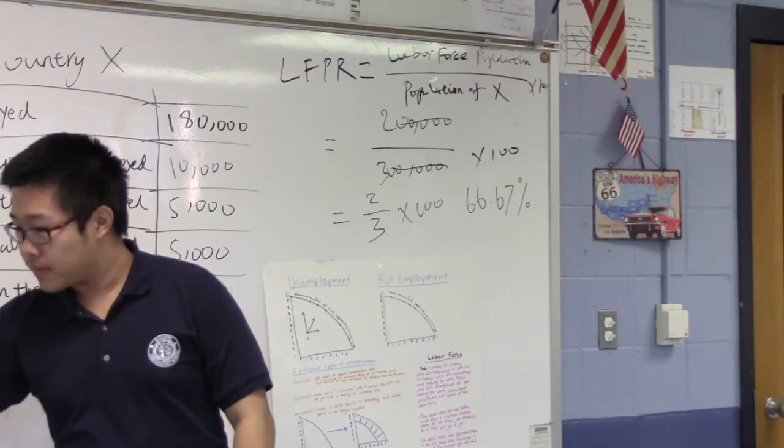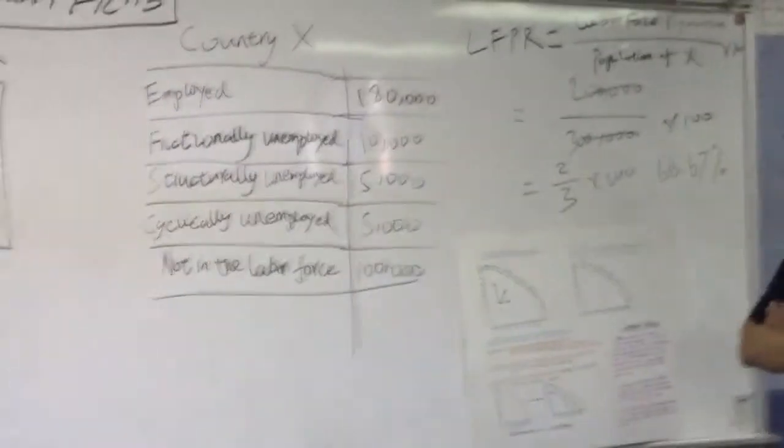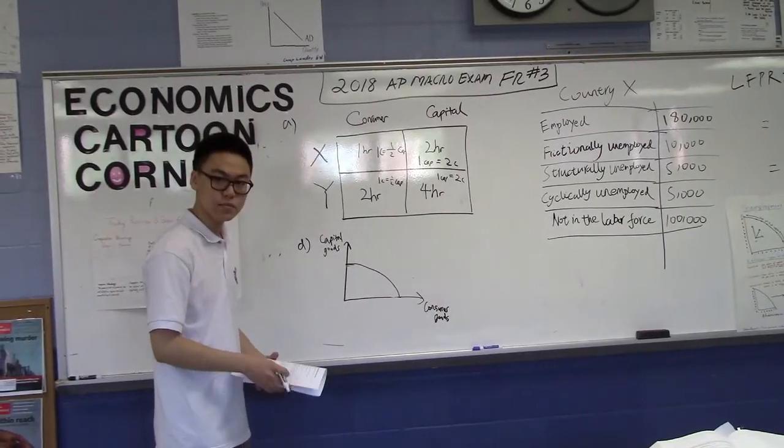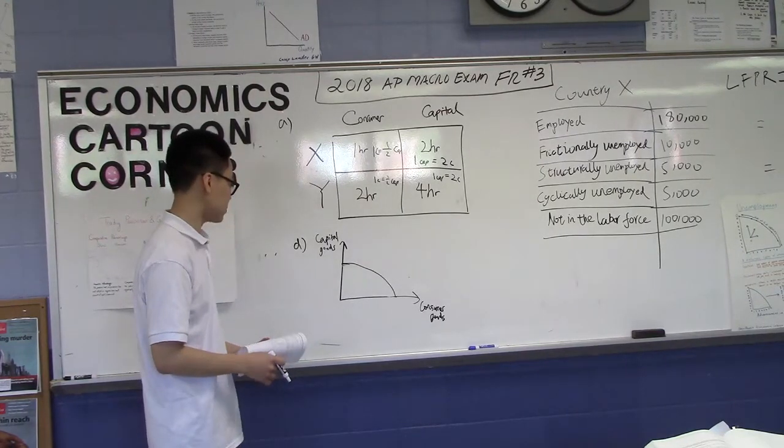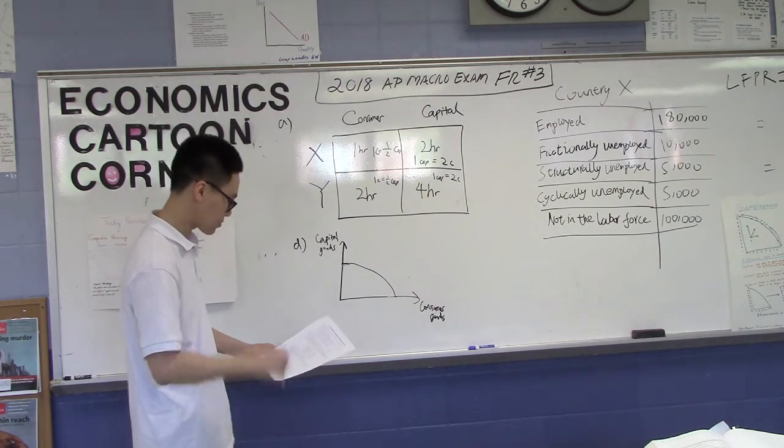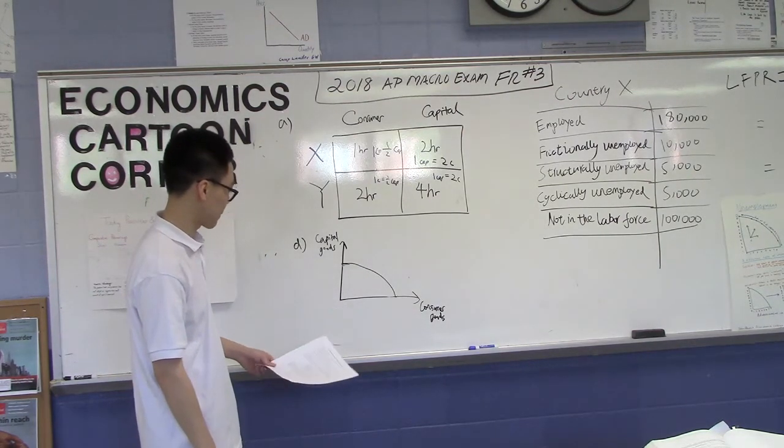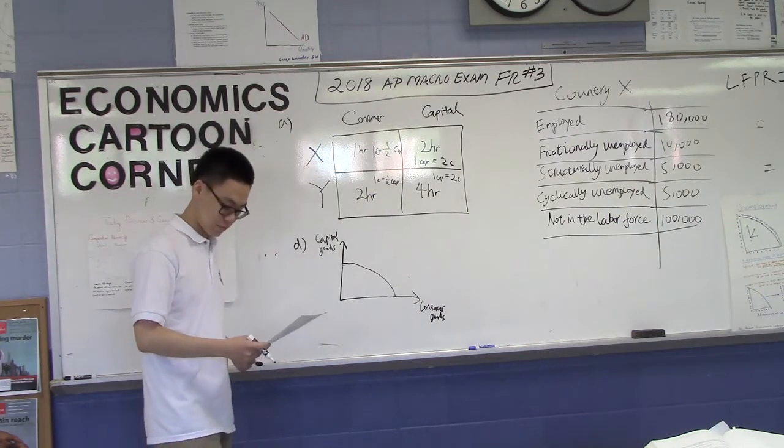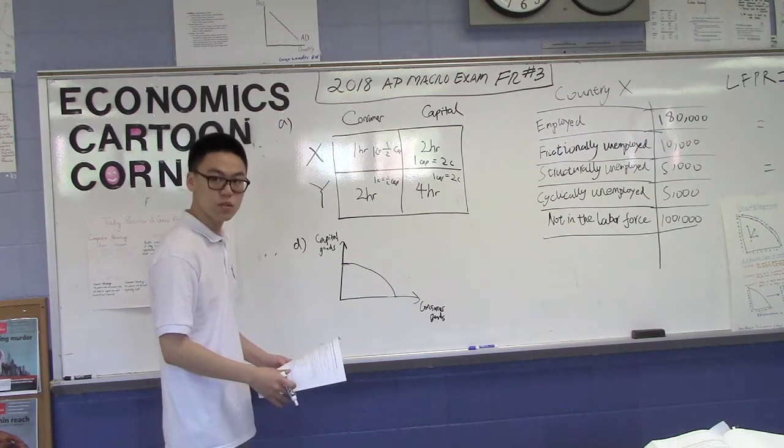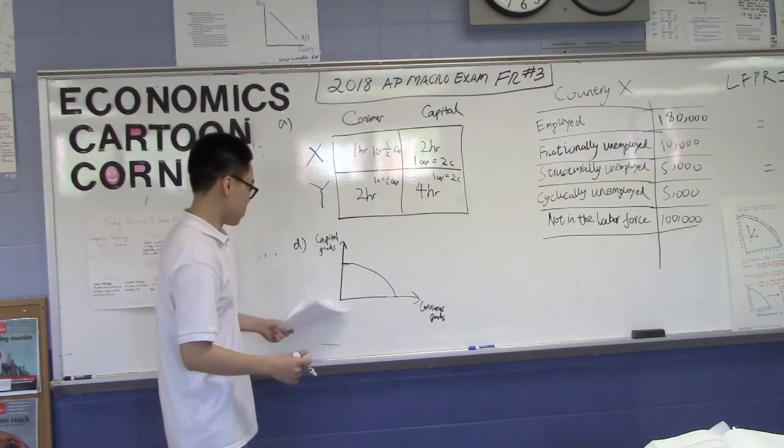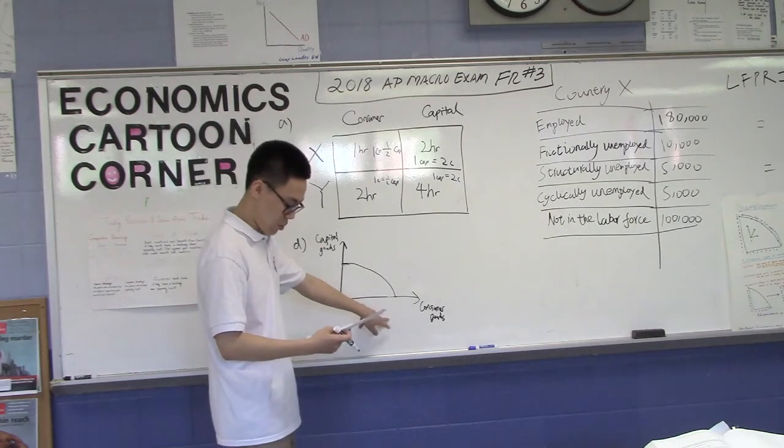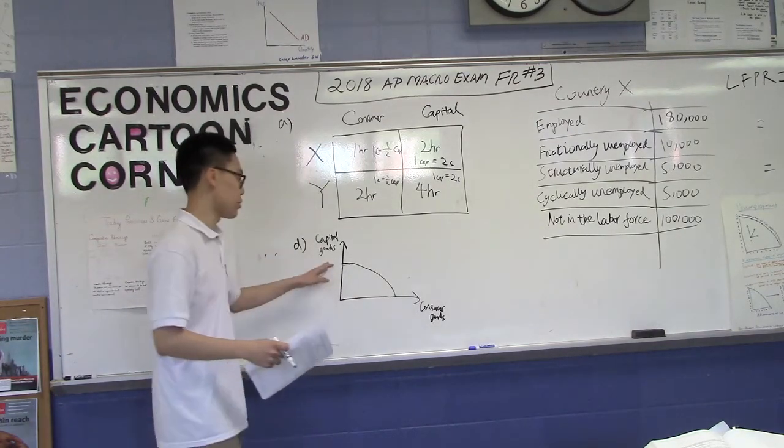And that really tells us something about an economy: what percent of their population is part of a labor force, employed and unemployed. Final question, going back to Michael. Draw a correctly labeled graph of the production possibility curve for country X with consumer goods on the horizontal axis and capital goods on the vertical axis. Indicate a point on your graph labeled Z that reflects the current level of unemployment. Okay, so here I drew the PPC of this country.